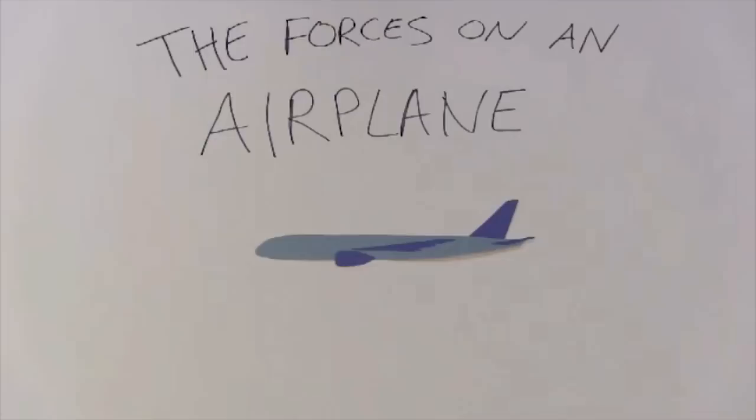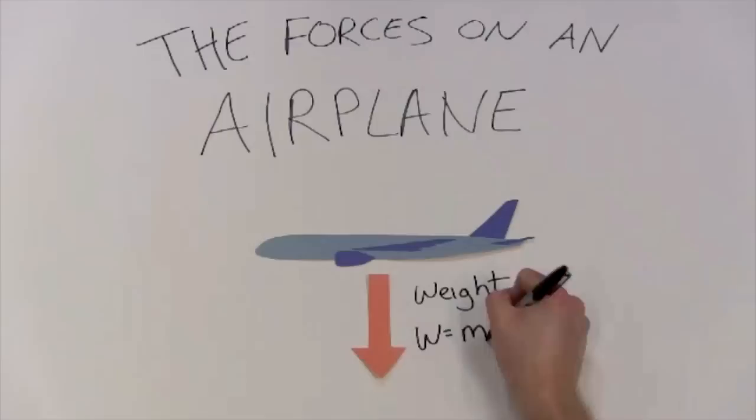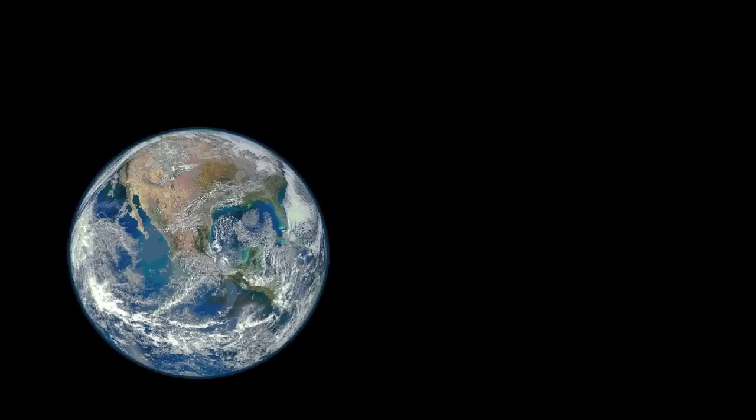The first force acts on all these vehicles - really it acts on everything. It's the weight force, which points down towards the center of Earth. Weight is equal to the mass of the airplane m times the acceleration due to gravity. Here on Earth, g is equal to 9.81 meters per second squared.